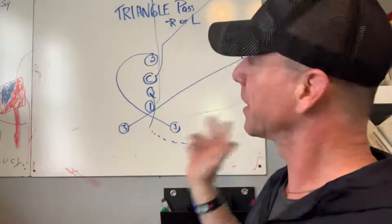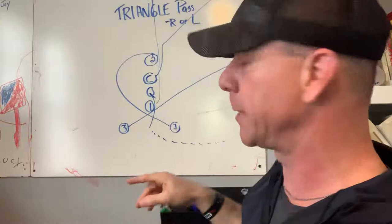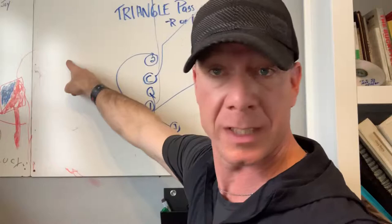If we go left, it's just opposite. Center is always going to go the way I call it. So if I go triangle pass left, center is deep left. One's always going to be deep middle. The only difference would be two and three. Triangle pass left, obviously two would go short left, pretty basic, and three would then be short middle.